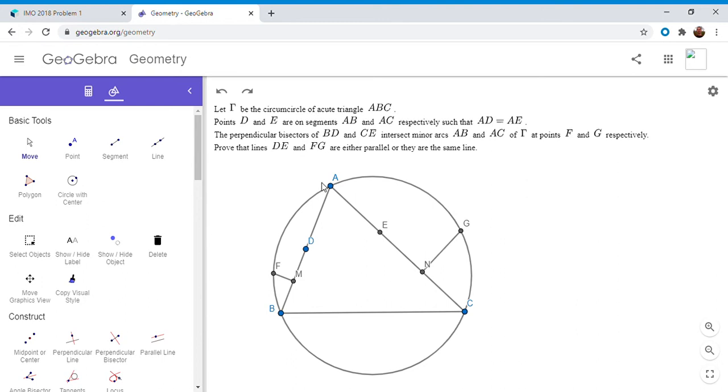Now I'm going to go over the solution. We have gamma is the circumcircle of triangle ABC. D and E are any points on AB and AC such that AD is equal to AE. The perpendicular bisectors of BD and CE meet arc AB at F and AC at G.